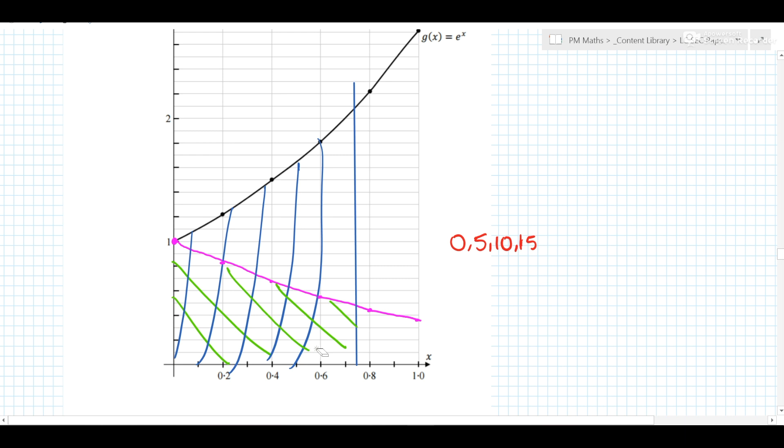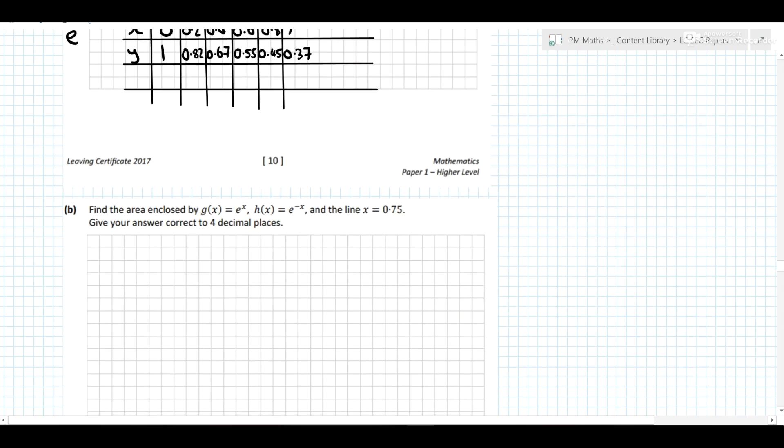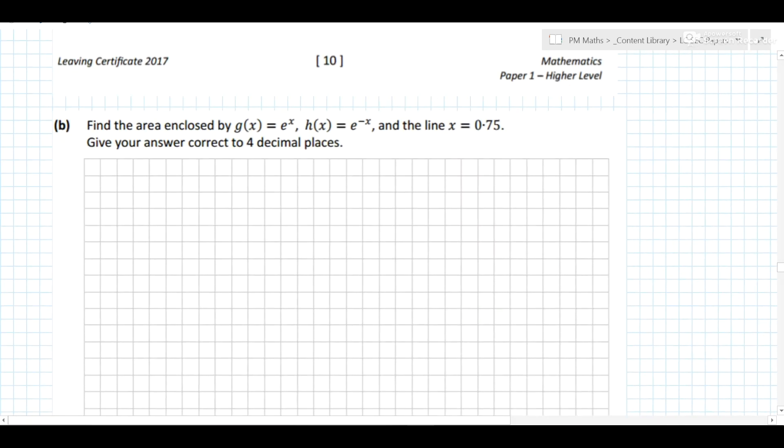So the area under g(x), and then we're going to subtract the area under h(x). So how do you get the area under a curve? Well, you find the integral of it between the limits. So the integral between 0 and 0.75 of e^x, because that's what g(x) is, and we're going to subtract the integral between 0 and 0.75 of e^(-x) dx.